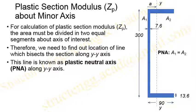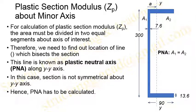Once we have found the plastic section modulus about the major axis, we may also need to calculate it about the minor axis (YY). When we look at the YY direction, the section is not symmetrical, so we have to calculate the location of the plastic neutral axis. The same approach applies: the area on either side of the PNA must be equal, i.e., half of the total area.